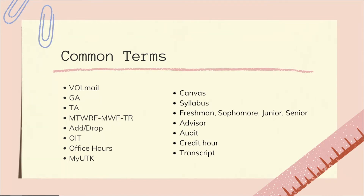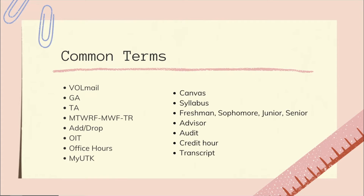The abbreviations MTWRF, MWF, or TR refer to when our classes meet — standing for Monday, Tuesday, Wednesday, Thursday, Friday; Monday, Wednesday, Friday; or Tuesday, Thursday. Your classes will generally meet on one of these three schedules and you should see this on your MyUTK under each class. Add/drop is how we talk about taking classes: when you take another class you are adding it, and if you leave a class you are dropping it. There are specific rules for when and how you can drop a class, so check with the university and your professors.